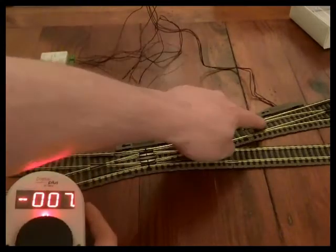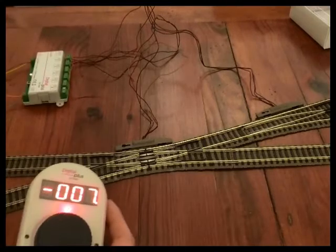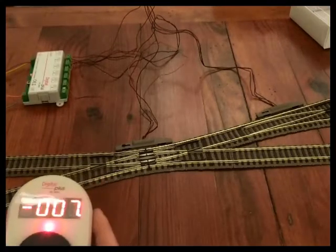So that one's now 7, 8, 9, 10, 11, 12, so it allocates six addresses on this accessory decoder.